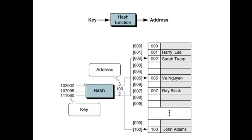Looking at an example, we have three keys: 102002 and others. A hash function is applied — the specific function will be discussed in subsequent slides. For key 102002, the hash function produces 5 as the address, so you go to address 5 to retrieve or store the value. For other keys it produces 100 and 2 respectively. No matter how many times you feed the same key, it always produces the same address — the output for a particular key is always constant.